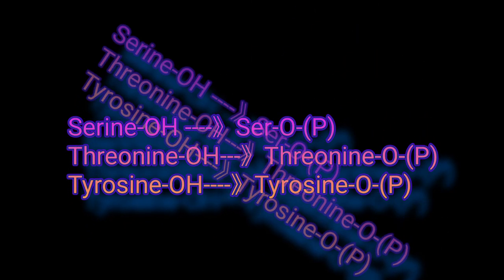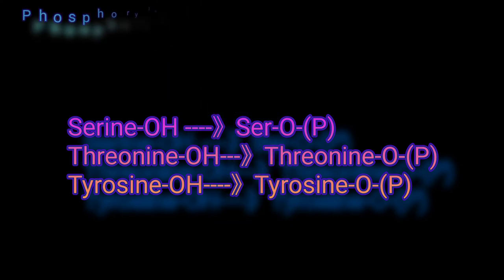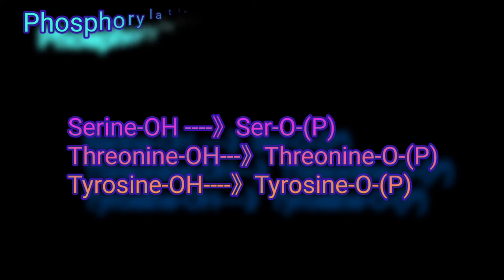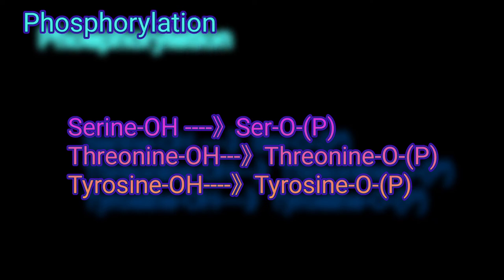Covalent modification is a type of regulatory enzyme mechanism where a new covalent bond is created. The most common type of covalent modification is phosphorylation, which is adding a phosphate group to specific hydroxyl residues, typically in the side chains of serine, threonine, and tyrosine.